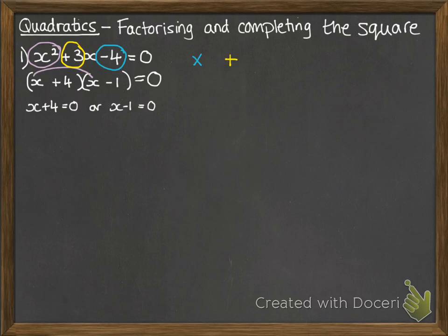Now if those two brackets are multiplying to make 0 that means that one or both of them has to be 0. So we look at those possibilities to find our solution. So that gives us x equals minus 4 and x equals 1. These are called the roots of the equation. So if you're asked to find the roots that means just solve it.